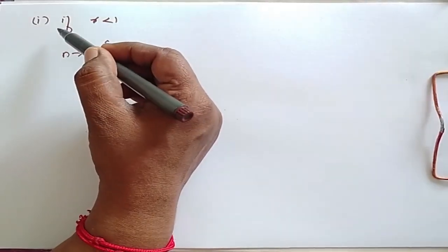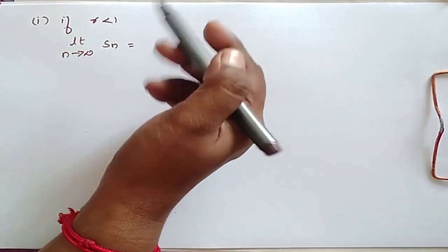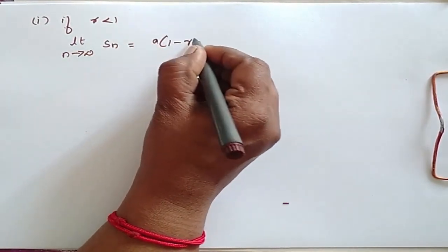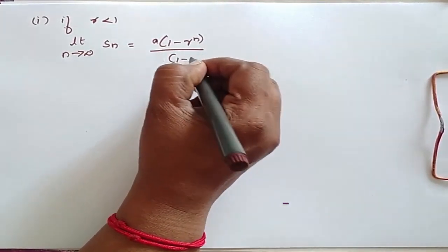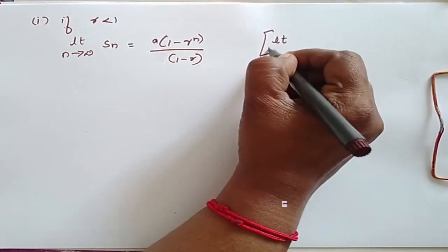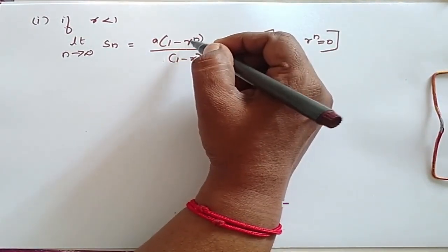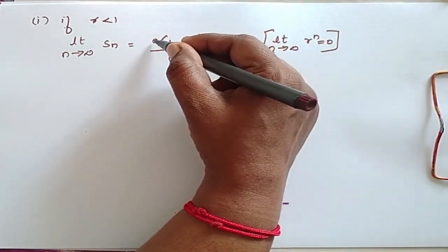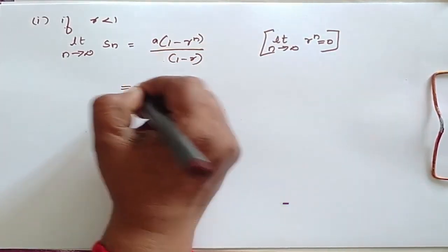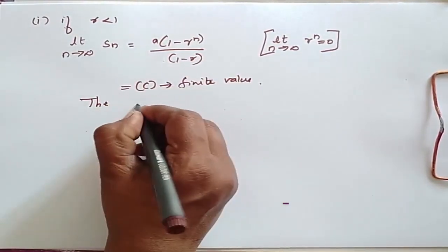The first possibility: if r is less than 1, the limit as n tends to infinity of S_n equals a(1 - r^n)/(1 - r). When we substitute n → ∞, r^n tends to 0. So this becomes a/(1 - r), which is a finite value. Therefore the series is convergent.